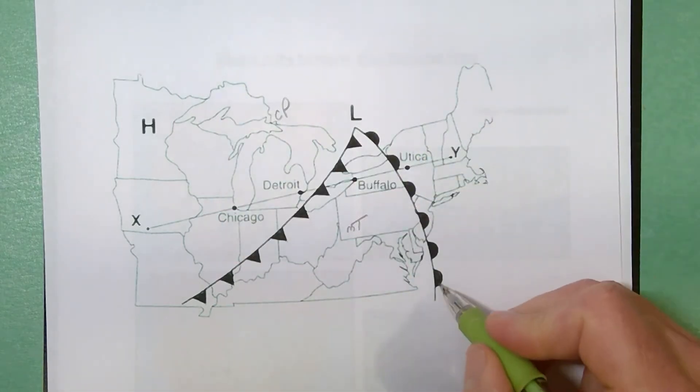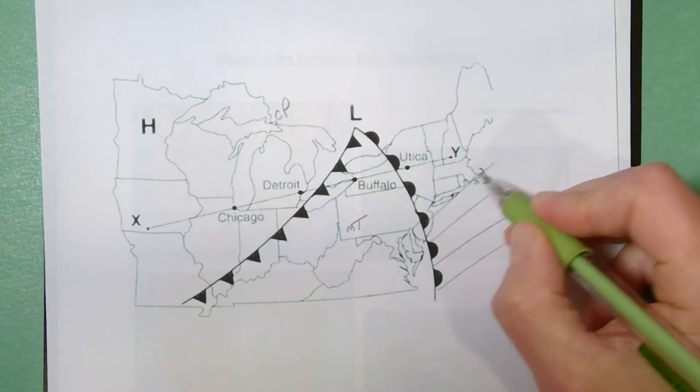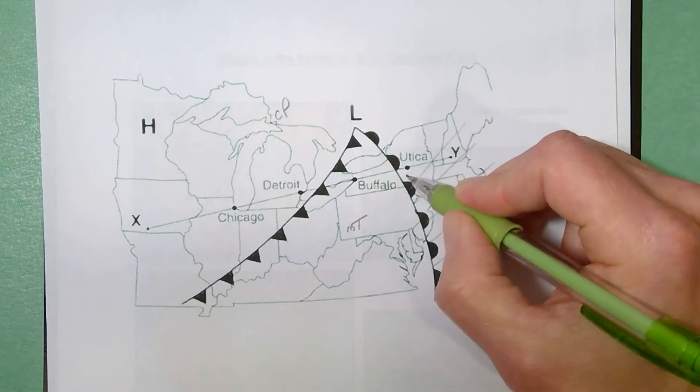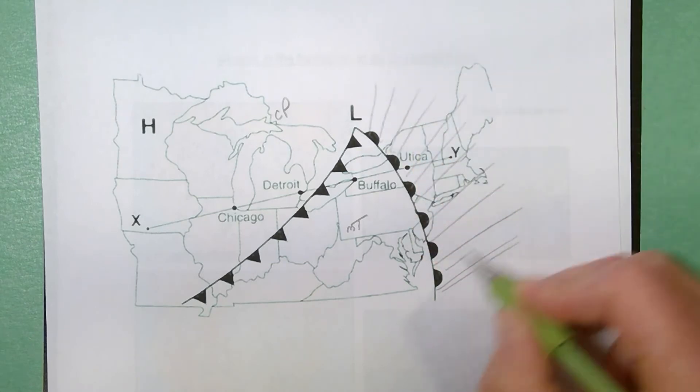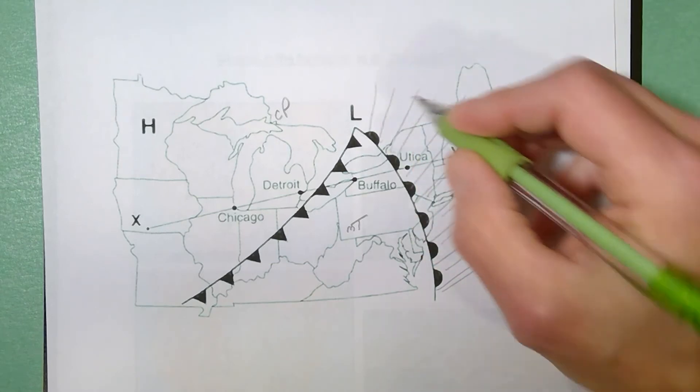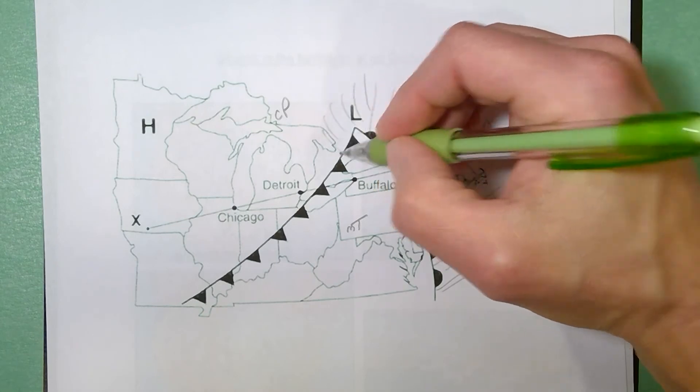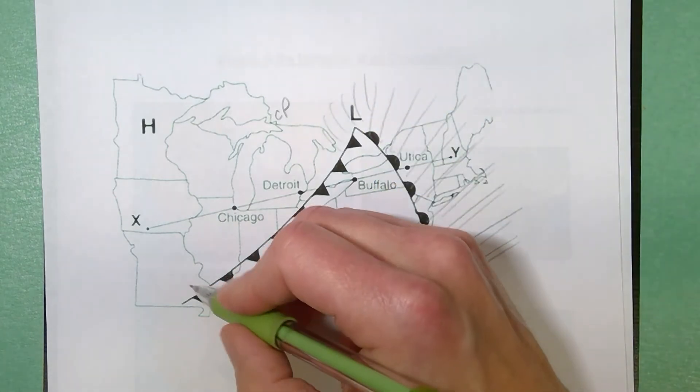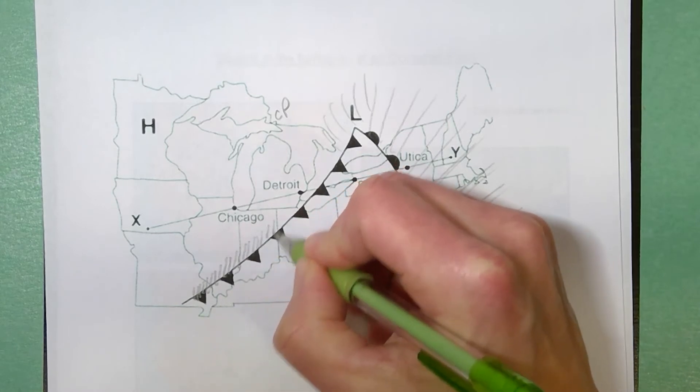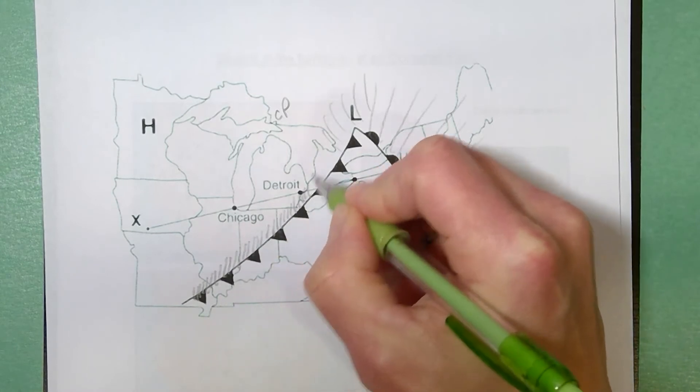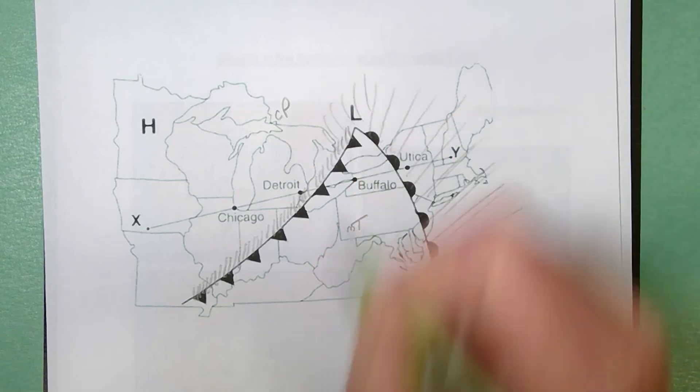You would get a broader area of precipitation ahead of the warm front. So it's raining ahead of your warm front. The rain wraps around the center of your low because your air rises and you get a short but heavy band of precipitation along the cold front.